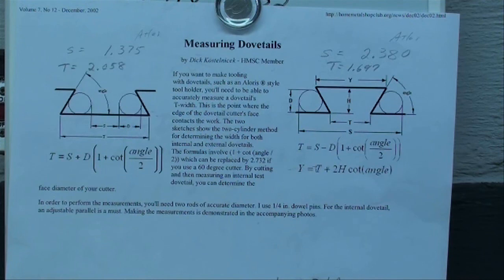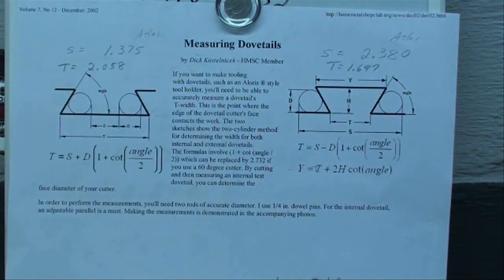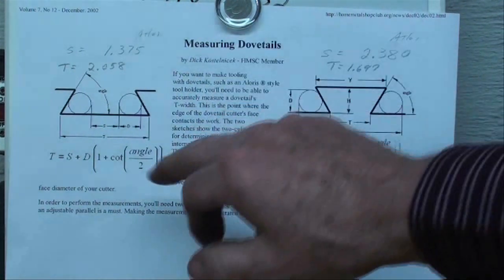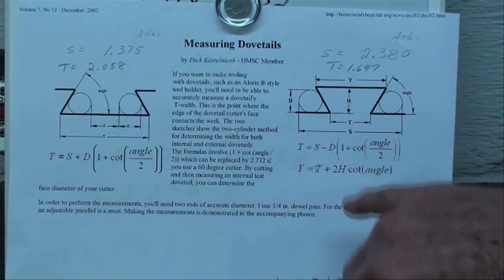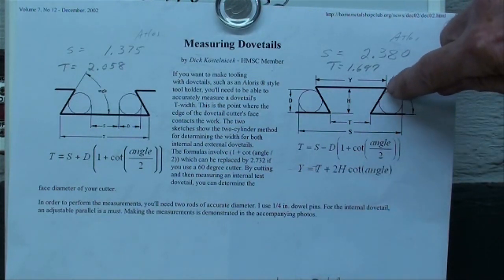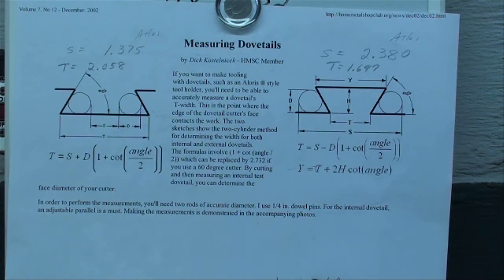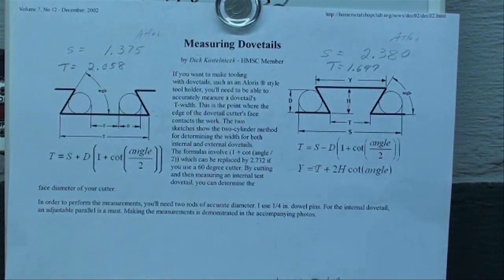I went on the internet and found this information on measuring dovetails. I think it's better than what's in the book. This is authored by Mr. Dick Kostelnik, so I'm giving him credit for this. We've got several formulas here. We measured S already and we're going to plug it into that formula where we are finding T. It would do you no good at all to just measure right in here without the pins. The same thing on the lathe - it has to be done by this method even though it seems rather complicated.